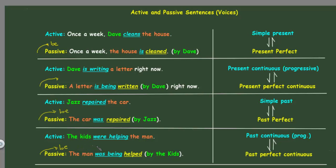The last example: the kids were helping the maid — this is the past continuous or progressive. We switch the subject and object to get 'the maid,' and 'to be' takes the past continuous form: 'was being.' The verb goes to the third form, so we get: the maid was being helped. This means the past continuous brings us to the past perfect continuous.